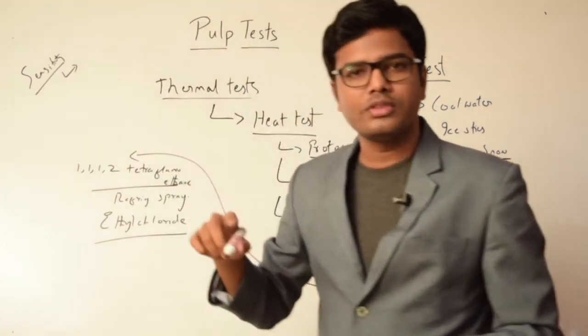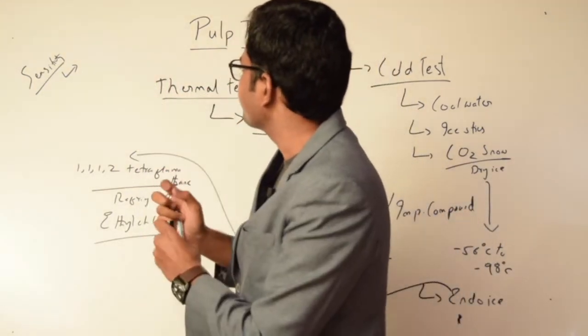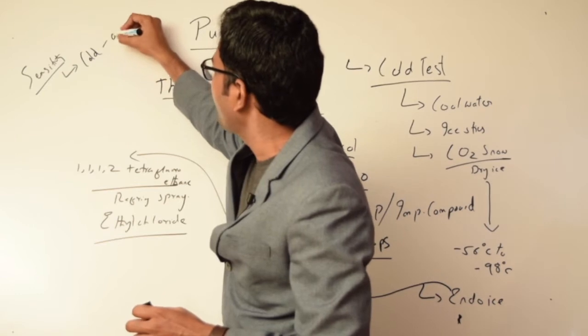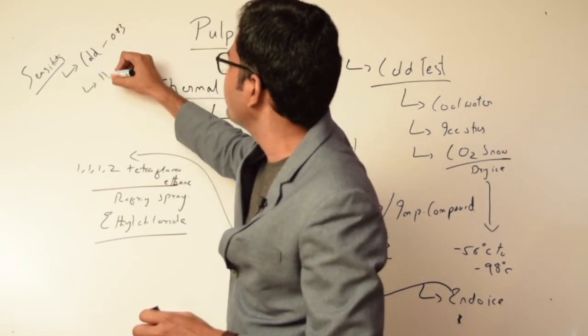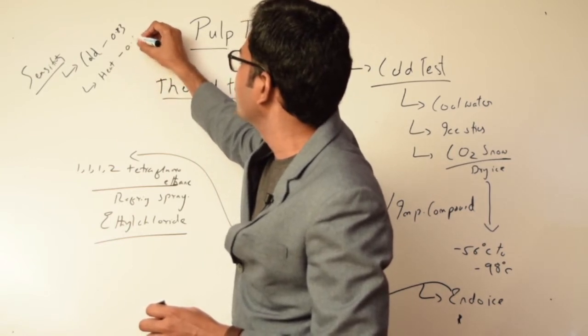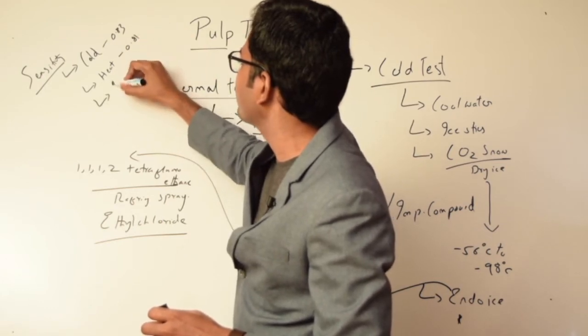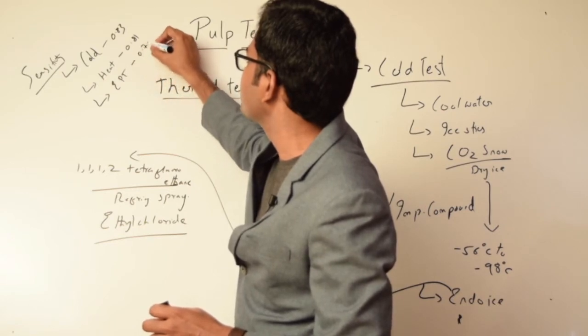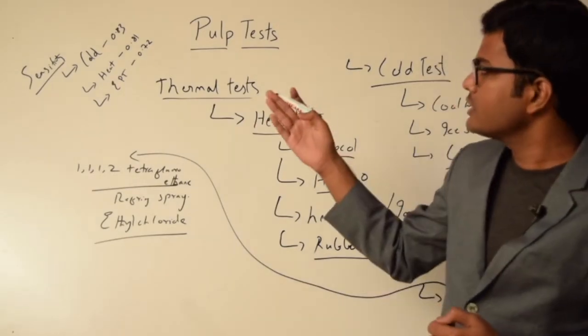In that study, they proved that the sensitivity of the cold test is 0.83, of the heat test the sensitivity is 0.81, and for electric pulp testing the sensitivity is 0.72.